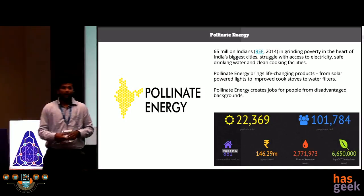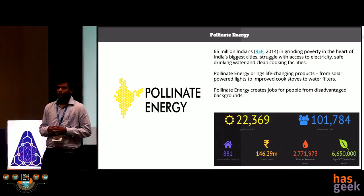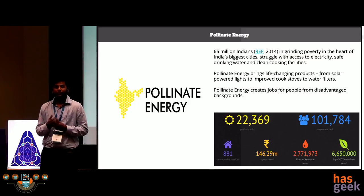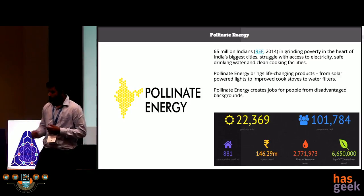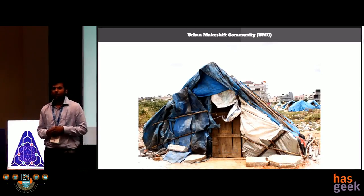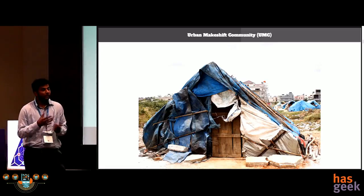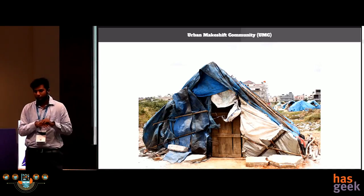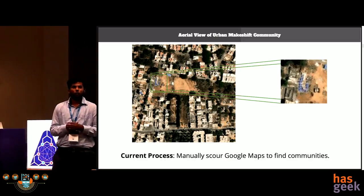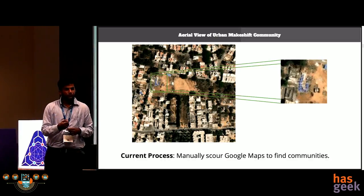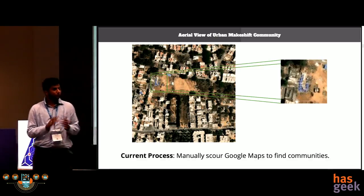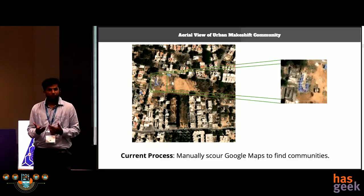This year, we collaborated with Pollinate Energy. Pollinate Energy is a social business organization that brings life-changing products such as solar bulbs and water filters to millions living in poverty in India. Their main audience is urban makeshift communities — these communities build makeshift houses with a blue tarpaulin surface over their roof. Urban makeshift communities are abbreviated as UMCs, and I'll be referring to them as UMCs henceforth.